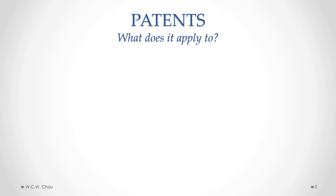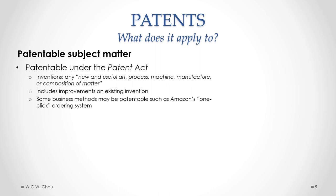What is considered to be patentable subject matter? Under the Patent Act, what is patentable are inventions, which are considered to be new and useful art, process, machine, manufacture, or composition of matter. It may include improvements on existing inventions, and a recent development is that some business methods may be patentable.